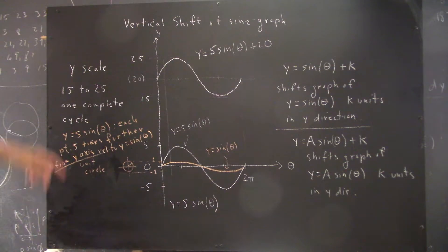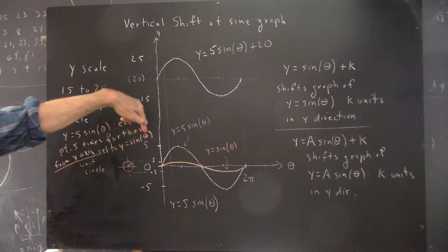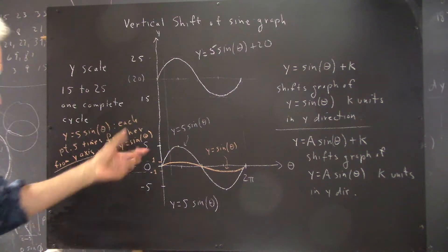I'll say this: each point is five times further from the y-axis relative to y = sin(θ), so that should be fairly clear.